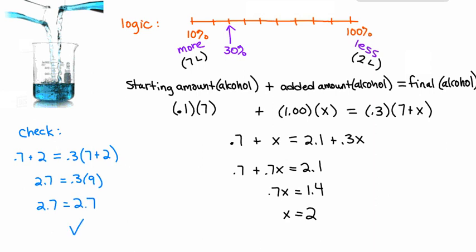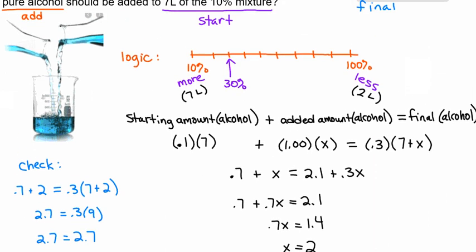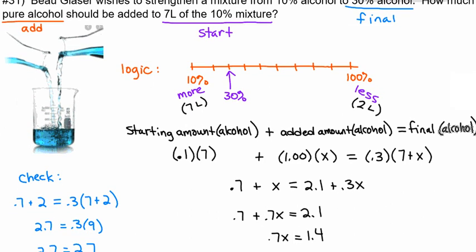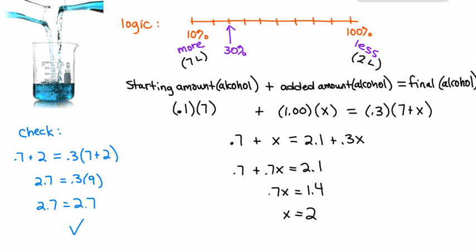So it checks. So then, to complete the problem, we should answer more as a statement. So what was the question? Let's make sure we are answering the question. How much pure alcohol should be added? So we'll say, add 2 liters of pure alcohol. There we go. I'll see you next time.